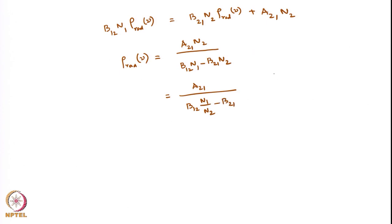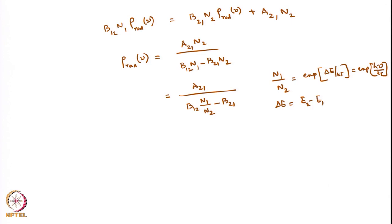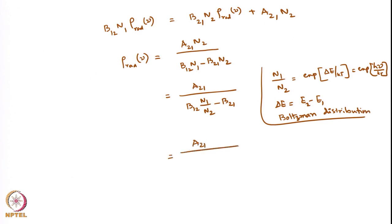We know that N1/N2, the population of the ground state with respect to the excited state, from the Boltzmann distribution is equal to exponential(delta_E / kT), or exponential(h*nu / kT), where delta_E equals E2 minus E1. Plugging this in, rho(nu) equals A21 divided by (B12 * exp(h*nu / kT) minus B21).